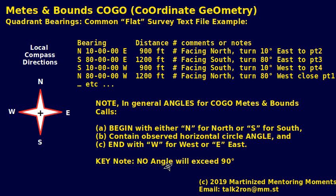There's another key thing to note: no angle will ever exceed 90 degrees in quadrant bearings for metes and bounds. Typically in a regular magnetic compass or for aviation you'll see from 0 to 90 to 180 to 270 and back, or a maritime compass. Generally in surveying that's not used because there's a very difficult confusion called reciprocal bearing, which we'll see in a little bit.